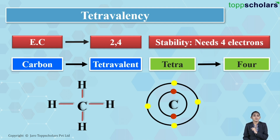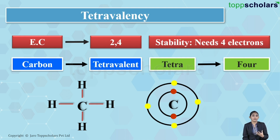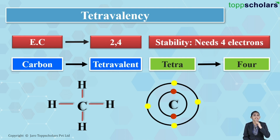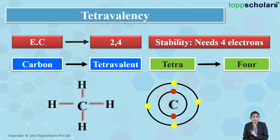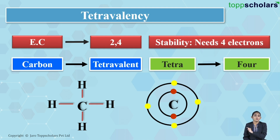You can see the formation of a methane molecule, that is CH4, wherein we have 1 carbon atom and 4 hydrogen atoms. Since the valency of carbon is 4 and it is tetravalent, it forms 4 covalent bonds — 4 carbon-hydrogen covalent bonds are formed here.